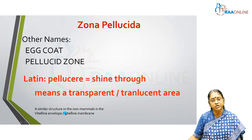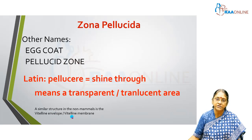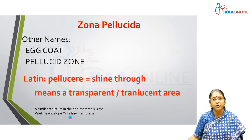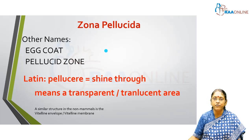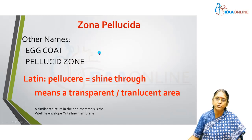A similar structure does exist in non-mammalian eggs as well. However, in non-mammalian eggs this layer is called a vitelline envelope or a vitelline membrane. So zona pellucida is exclusive to mammalian embryos or mammalian oocytes, and it is the layer of glistening extracellular matrix that surrounds the mammalian oocyte.